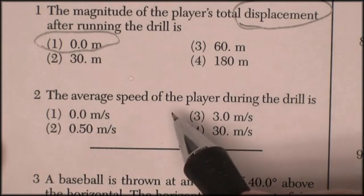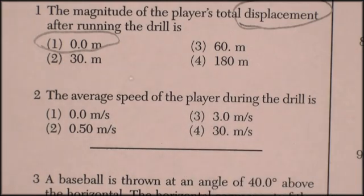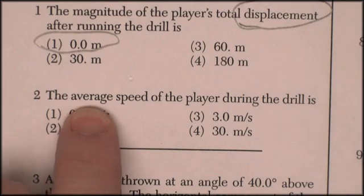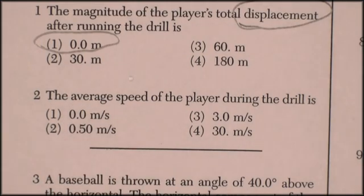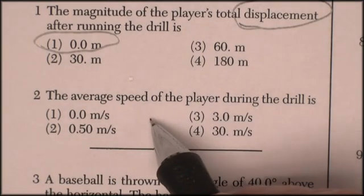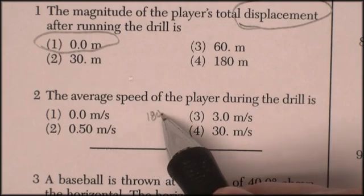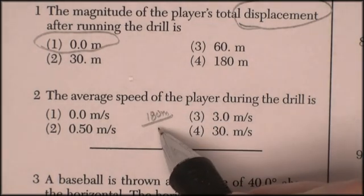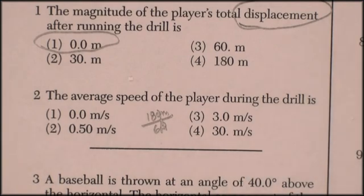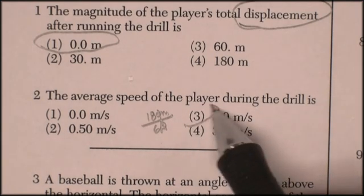The average speed. Now it would be velocity, but velocity is in a straight line. Speed is just total distance divided by total time. So total distance is going to be 180 meters divided by 60 seconds. So it's 18 divided by 6. That's 3 meters per second.